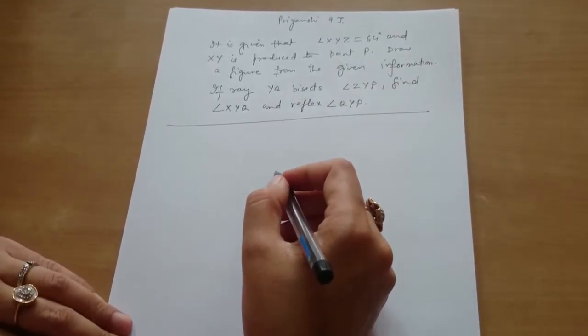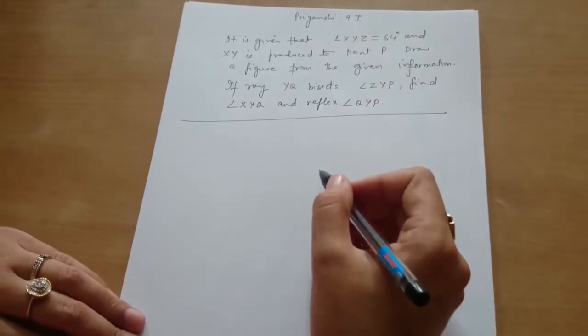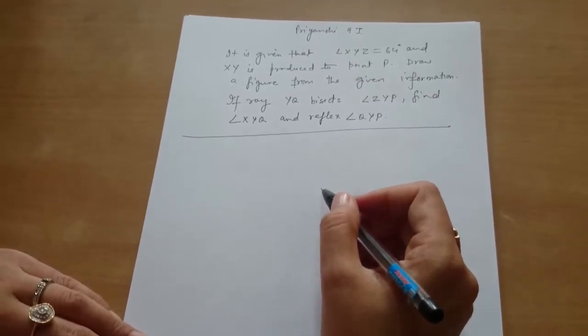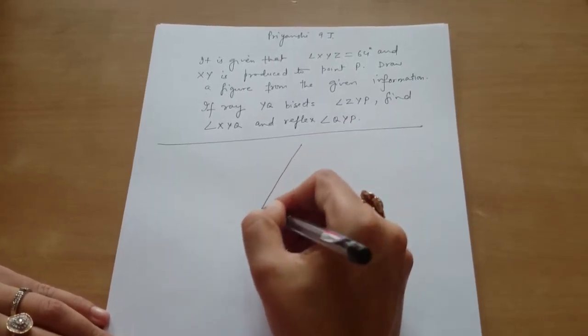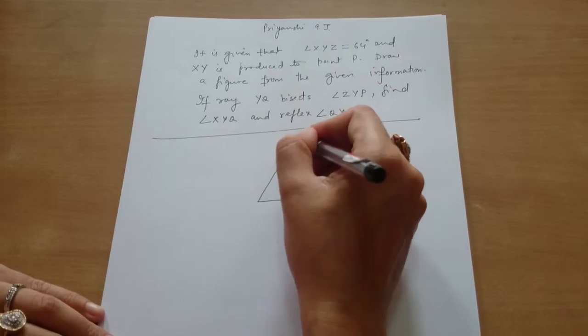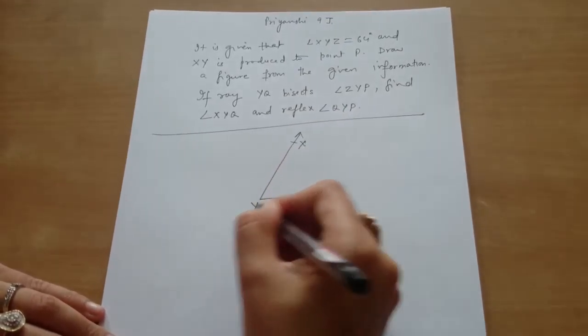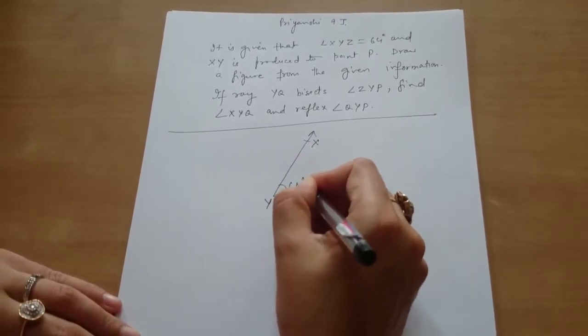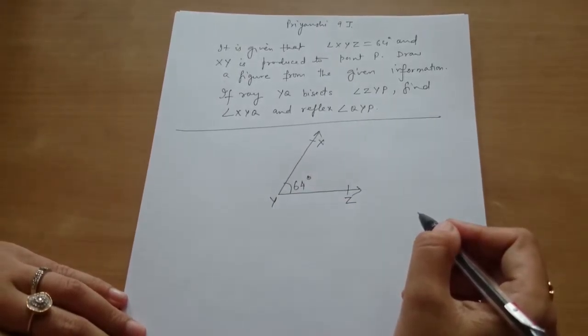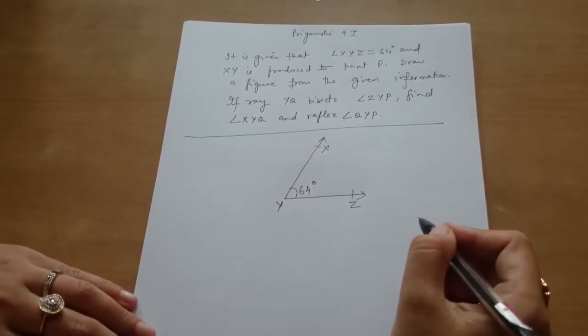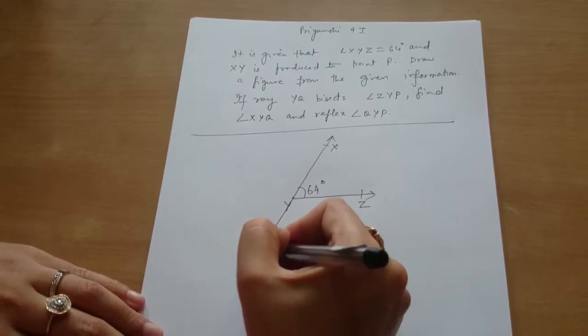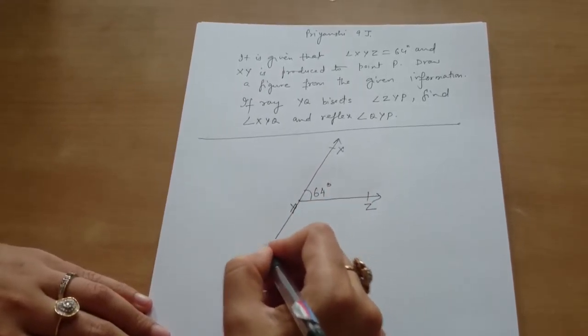First we will draw the figure according to the question. It is given that angle XYZ is equal to 64 degrees. XYZ, this is 64 degrees. Then we will extend XY to point P. To point P. Fine.